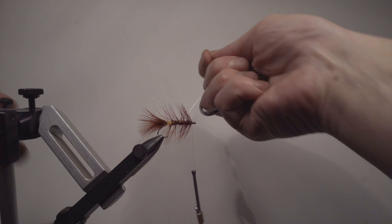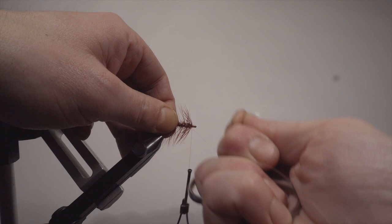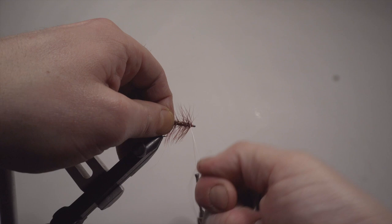So this one I'm wrapping towards me because I want this, if the hackle stem gets bitten off or if I hit a rock or something, this ribbing will still make the hackle stay on the fly. So that's why it needs to be reversed.